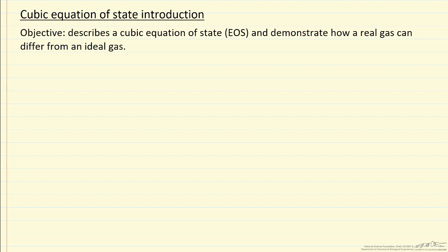So first, let's write down the Van der Waals equation. This relates pressure in terms of the ideal gas constant, absolute temperature, the volume — and this is specific volume, volume per mole — minus a constant B, which is positive, and then a second constant A over specific volume squared.